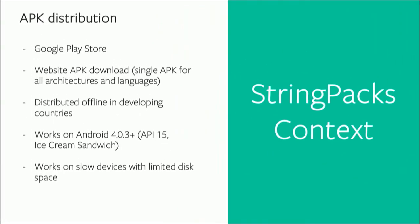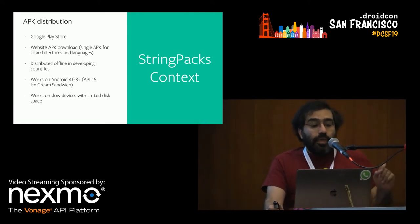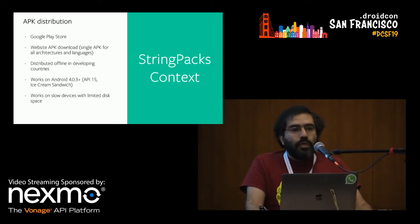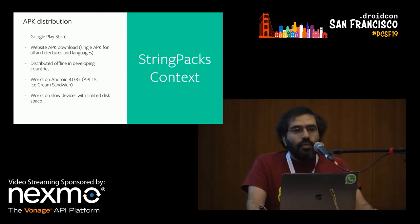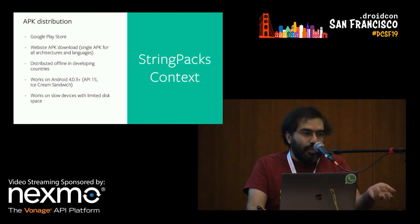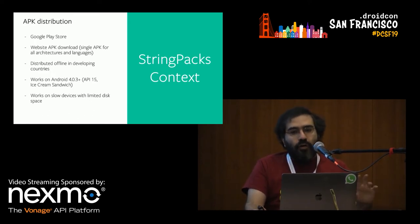In order to define the problem, let me give some context. We distribute our APK in a slightly different way than others. Google Play Store is there, of course, but we also provide our APK on the website — a single APK for all architectures and all languages. The idea is that you may not have a good internet connection. In developing countries like India, Indonesia, and Iran, there are people who go to shops, say they want WhatsApp, and the shop installs it with ADB or something directly on the phone. So this kind of offline distribution means there's going to be a wide variety of APKs out there — those also need to be small, and this is supposed to work on pretty old phones.